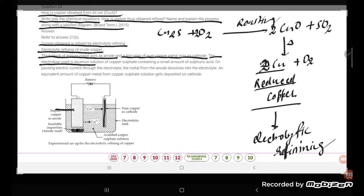The electrolyte used is aqueous solution of copper sulphate containing a small amount of sulfuric acid. This is the electrolyte - copper sulphate. On passing electric current through the electrolyte...